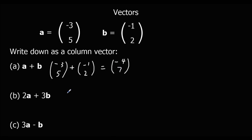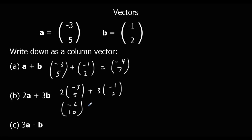The second one — 2a and 3b. Two of a gives minus six, ten. Three of b gives minus three, six. Then add the top and add the bottom: minus six plus minus three is minus nine, and ten plus six is sixteen. So 2a + 3b equals the column vector minus nine, sixteen.